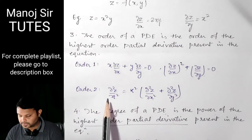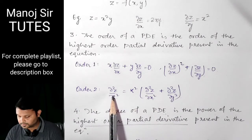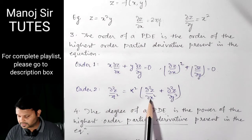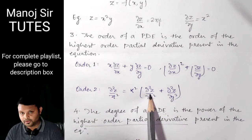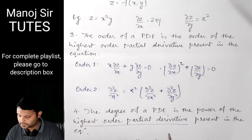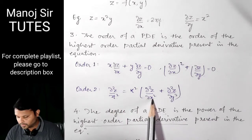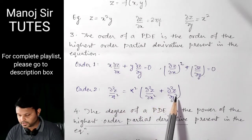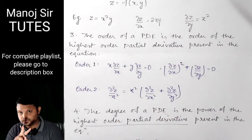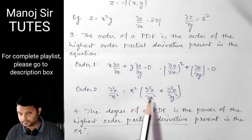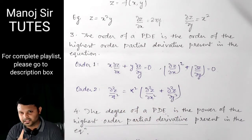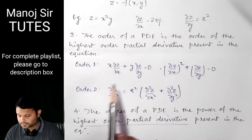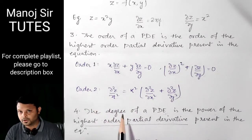Coming back to the Order 2 example — DEL squared Z upon DEL X squared — the order is 2 in all three terms. The degree of this partial differential equation is 1, because all three second-order partial derivative terms are raised to power 1.